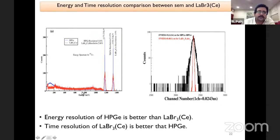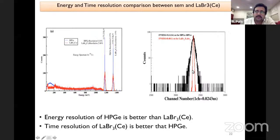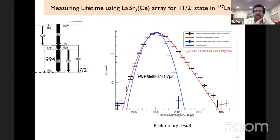The energy spectrum comparison shows that germanium has better energy resolution compared to lanthanum bromide — germanium resolution is ~0.2% while lanthanum bromide is ~2%, almost a factor of 10 better — which is why germanium is used for spectroscopy. However, for timing, lanthanum bromide is much better. By coupling lanthanum bromide with germanium detectors we get the best of both worlds.